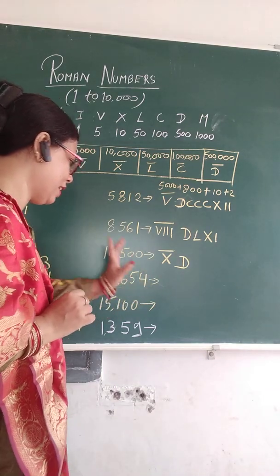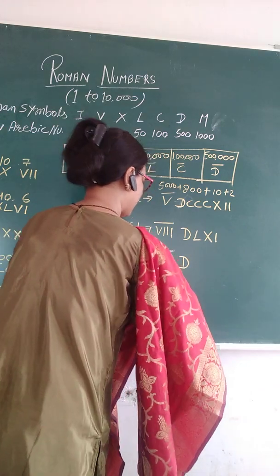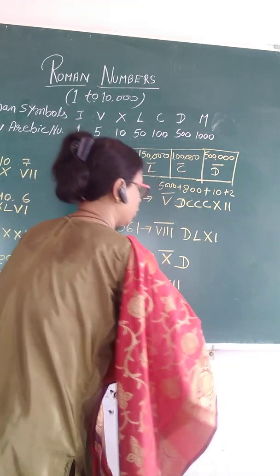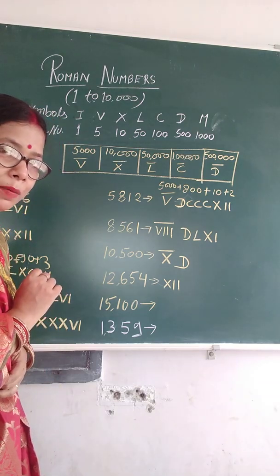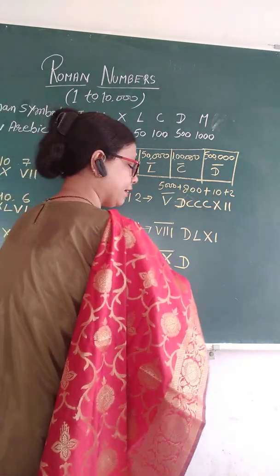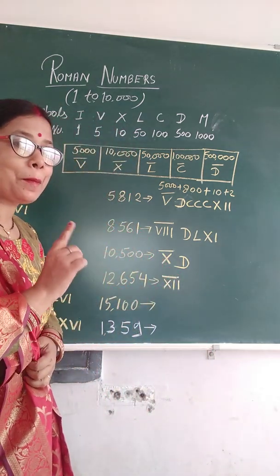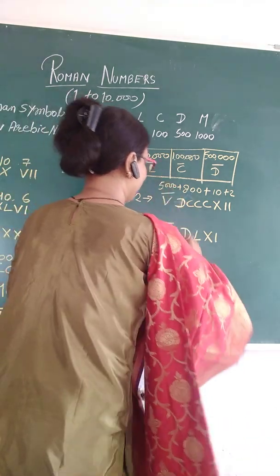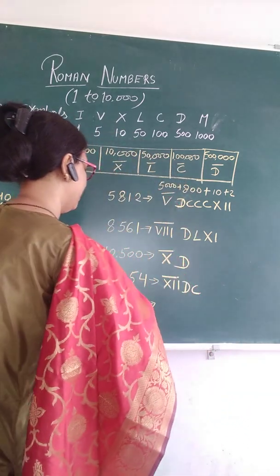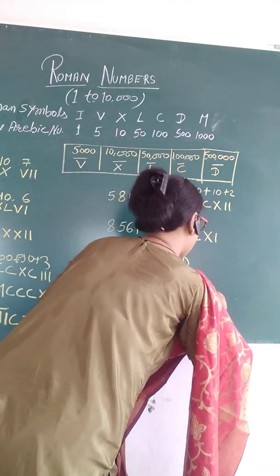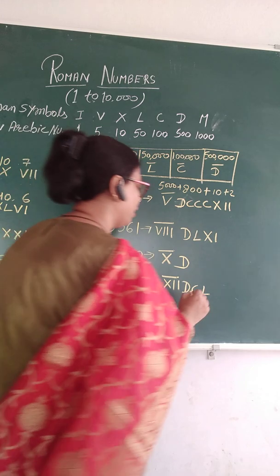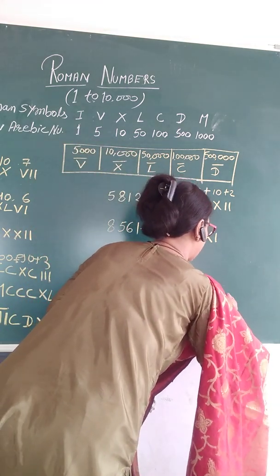Twelve thousand, six hundred, fifty-four. Twelve thousand: X and II with a bar on top — XII with bar. Six hundred: D and C. Fifty is L. And four means 5 minus 1, so IV. So 12654 is X̄IIDCLIV.